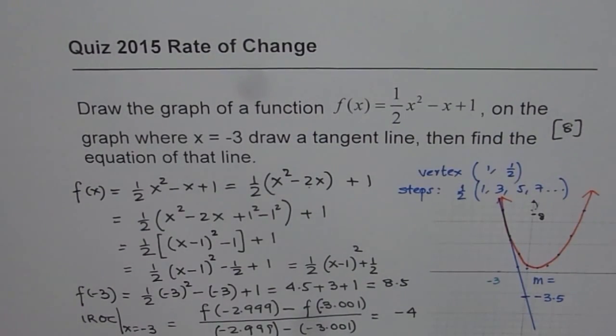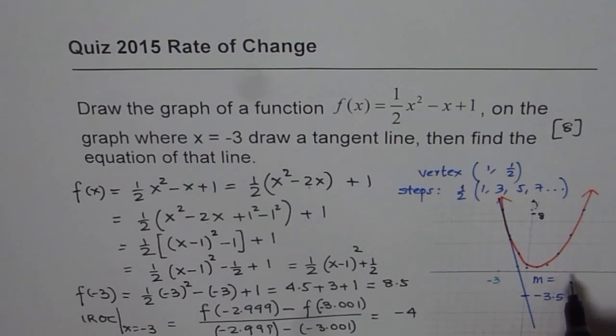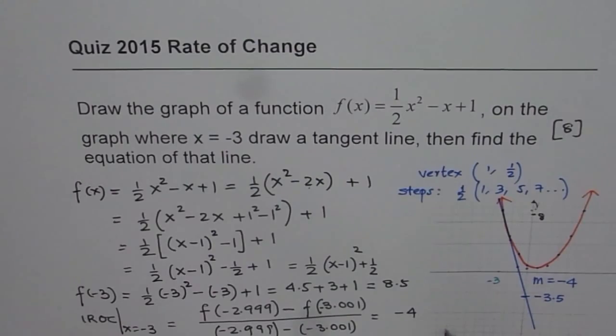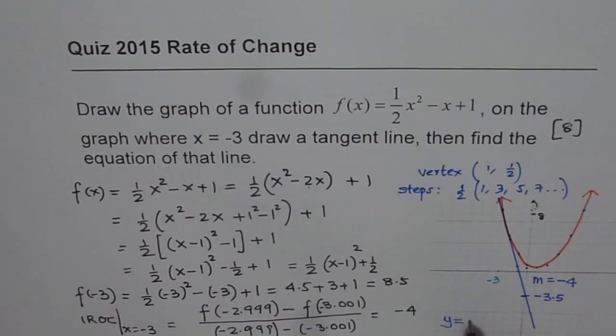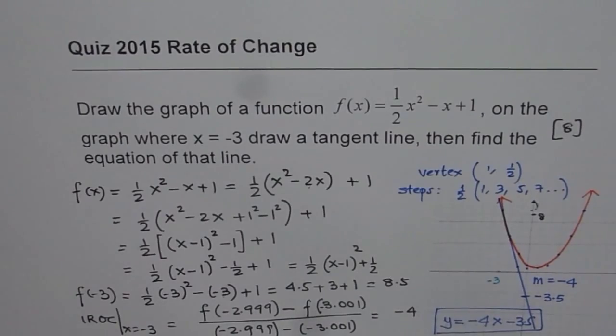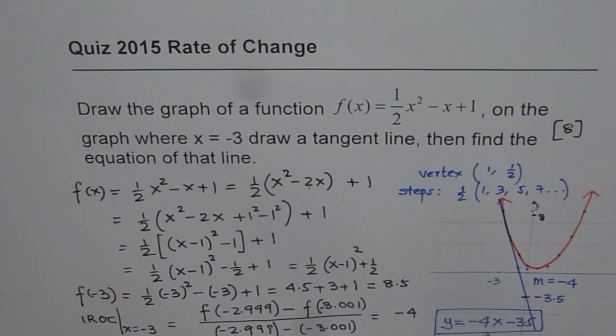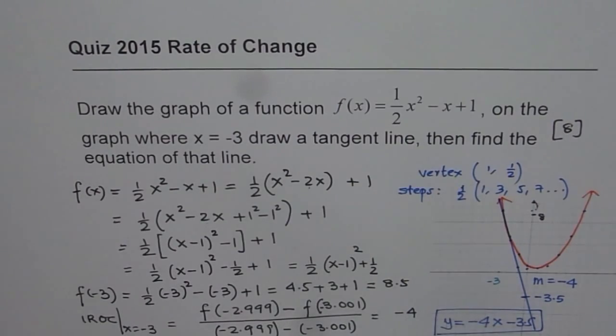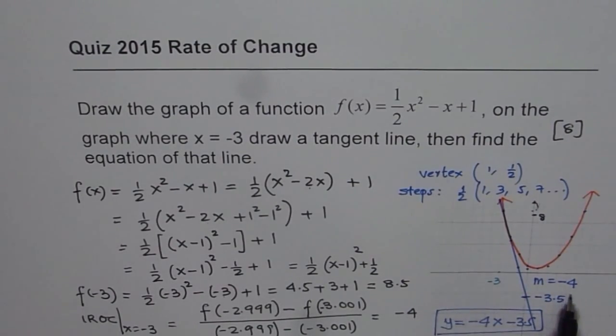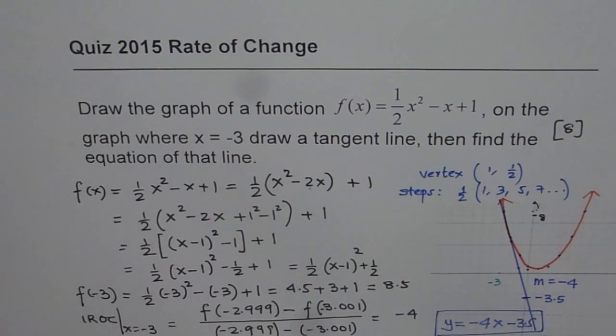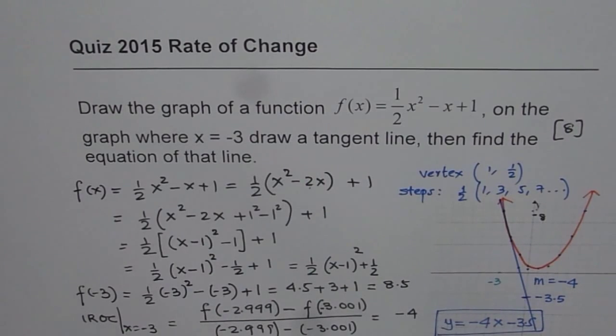And since you know that the y-intercept is minus 3.5 and slope of the tangent m equals minus 4, you can write down the equation of tangent, right? So the equation of the tangent is y equals minus 4x minus 3.5. So that becomes your answer for the tangent. So I will suggest that find instantaneous rate of change using the slope, which is minus 4 in this case. Draw your tangent line. So once you get your line, then write down the equation. That is a preferred way, right?